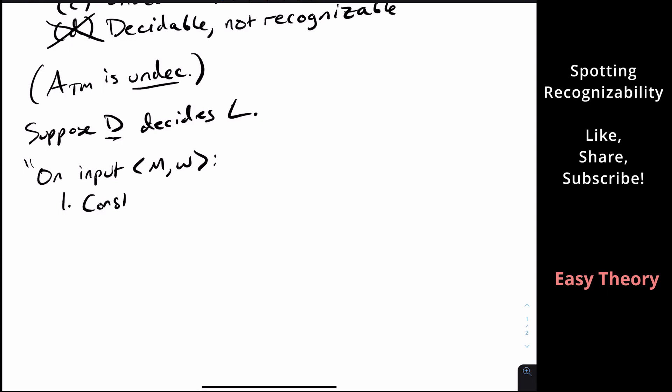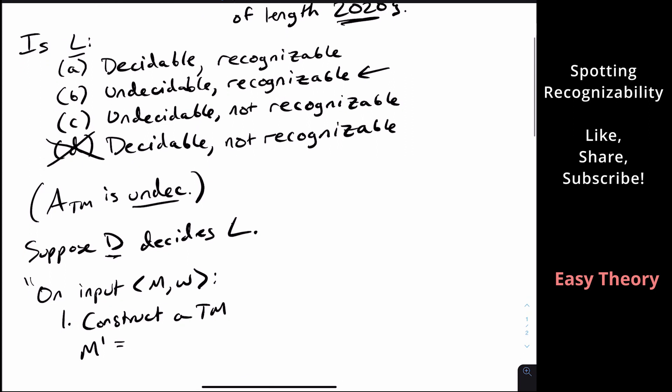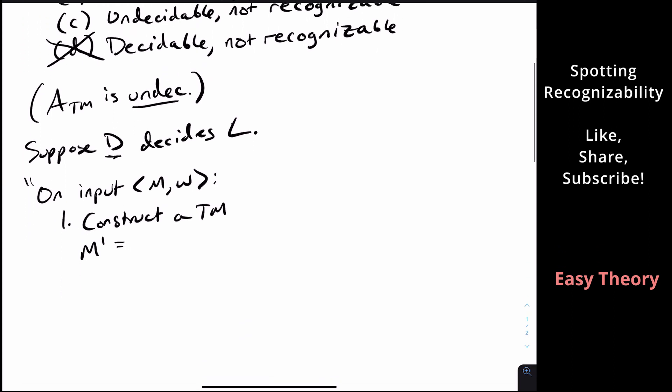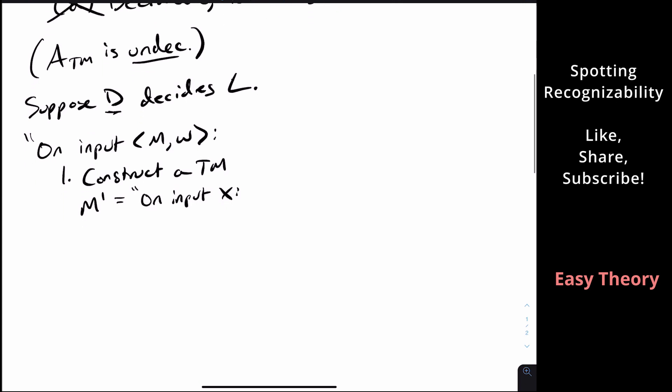So how can we actually use this? Well, what we're going to do is we're going to construct a Turing machine, I'm going to call it M prime. So that has one of two behaviors. And there are many other choices for how these behaviors can go. But here's what we're going to do. So what we're going to do is this on input x.